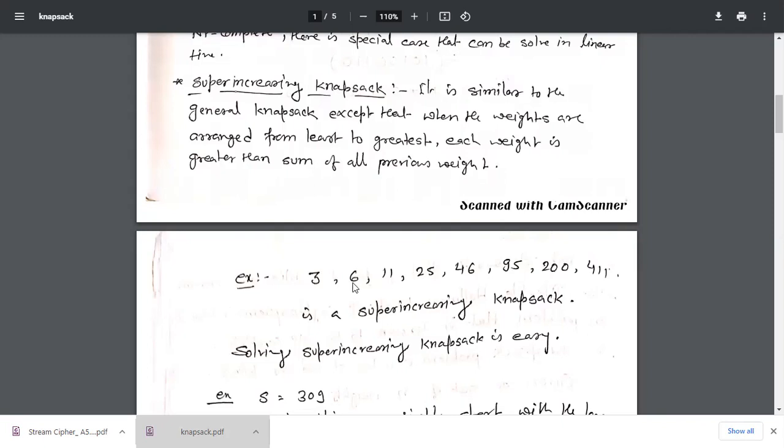25, previous elements are 11 + 6 = 17, 17 + 3 = 20. So previous numbers are less than that number. 46, similarly 46: 25 + 11 = 36 plus 6 = 42 plus 3 = 45. So 45 is less than 46. If we arrange like this, it is called super increasing knapsack.